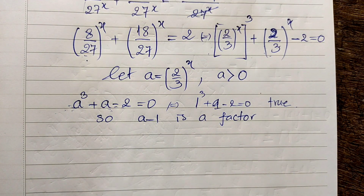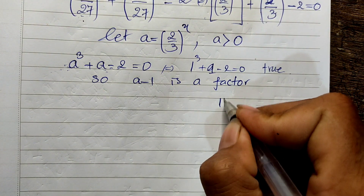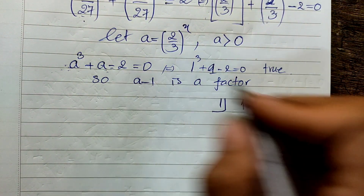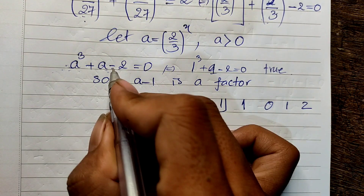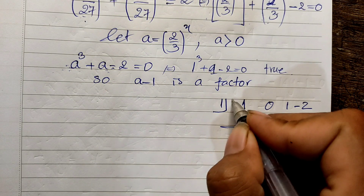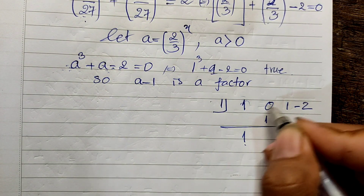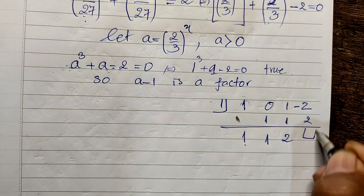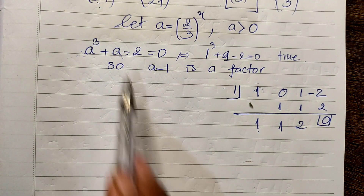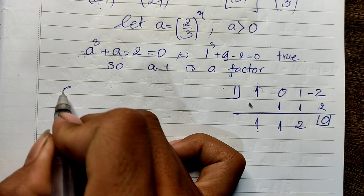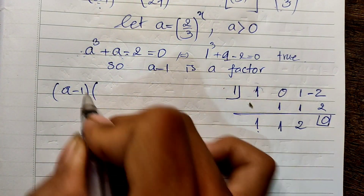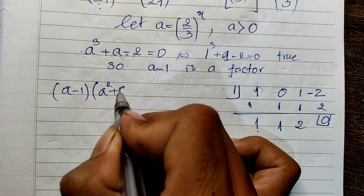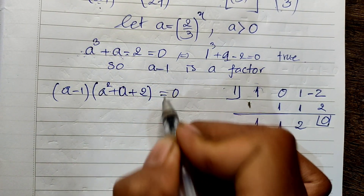To find the other factors, I use synthetic division. The coefficients are 1, 0, 1, negative 2, and I divide by 1. Bringing down 1, multiplying gives 1, adding gives 1; multiplying gives 1, adding gives 2; multiplying gives 2, adding gives 0. So the equation factors as: a minus 1, times a squared plus a plus 2, equals 0.